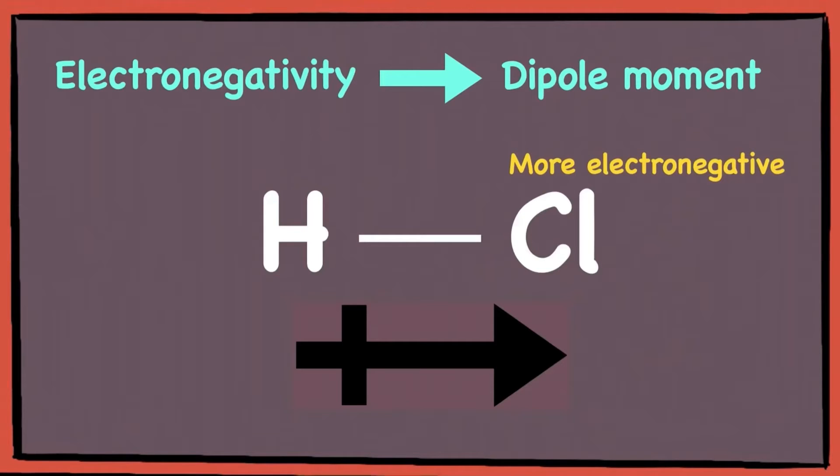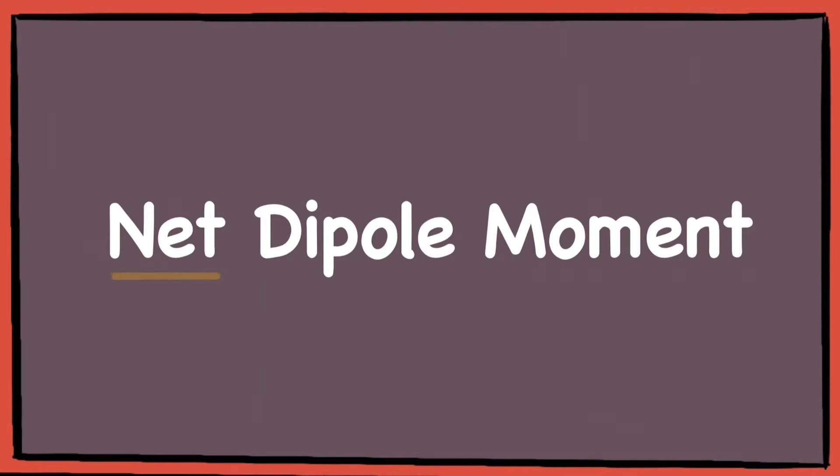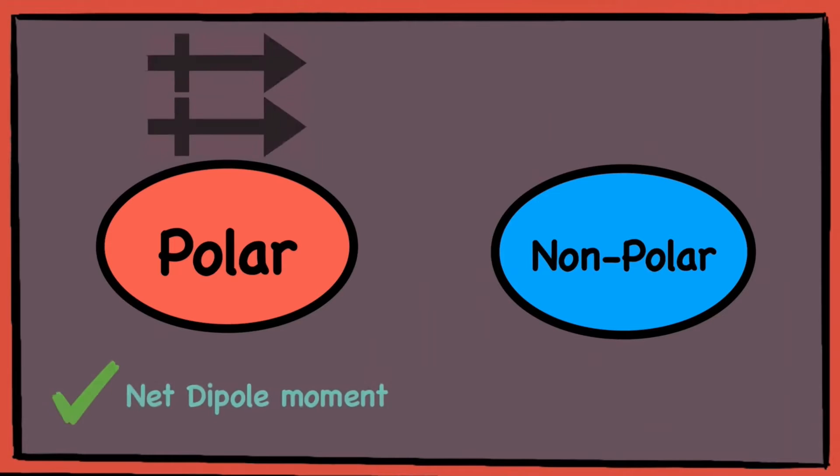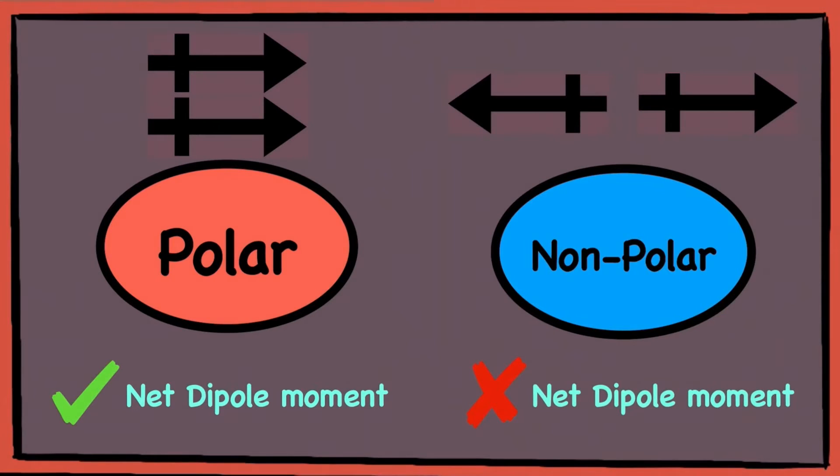What ultimately determines if a molecule is polar or non-polar is whether it has a net dipole moment. In short, polar molecules have a net dipole moment while non-polar molecules do not. In other words, non-polar molecules have a net dipole moment of zero because their individual dipole moments cancel out.